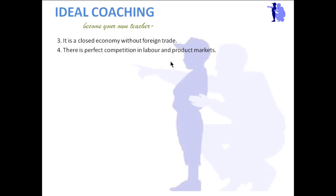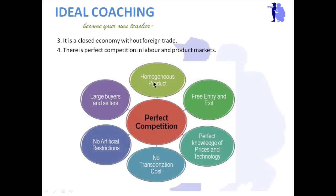The next assumption is: there is perfect competition in labor and product markets. I am explaining this for those who are at zero and want to learn from the beginning. In perfect competition, the first condition is homogeneous products — products that are alike each other. For example, a market of fruits contains only fruits, a market of vegetables contains only vegetables, a market of shoes contains only shoes. The product should be homogeneous.